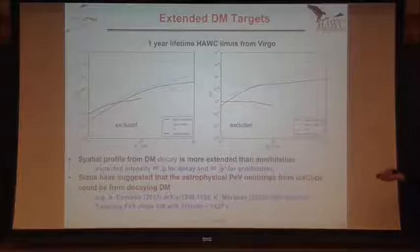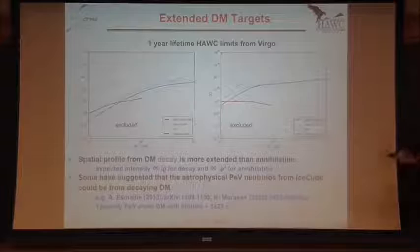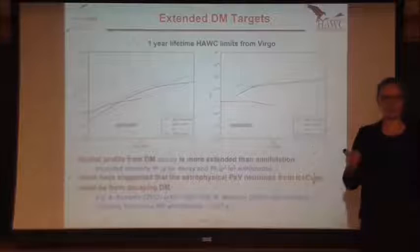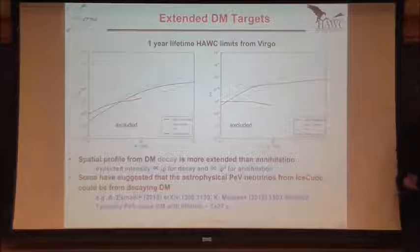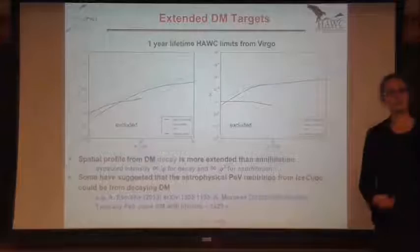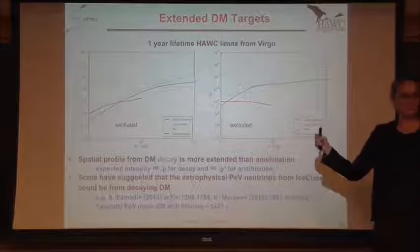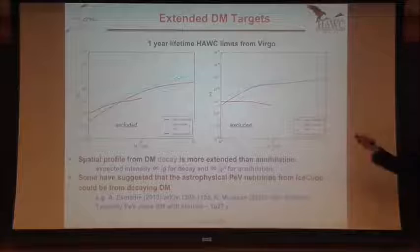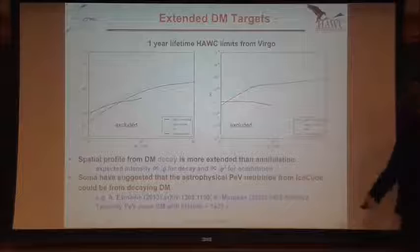With dark matter, if it's a fundamental particle, then its mass, cross-section, and lifetime have to be the same everywhere — like measuring the mass of the proton in the galactic center has to be the same as in the Virgo galaxy. So if we want to say these IceCube neutrinos came from dark matter decay, we have to be able to see the gamma rays as well. If we don't see them, that's evidence that it's not dark matter.